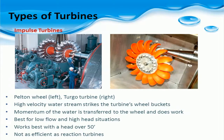Impulse turbines are large wheels with bucket runners attached to the outer circumference of the wheel and a turbine shaft at the center attached to a generator. A stream of water under high elevation head is forced through a nozzle, resulting in a high velocity stream of water. The impulse of the stream of water moves the bucket runners and turns the turbine shaft, producing energy in the generator.